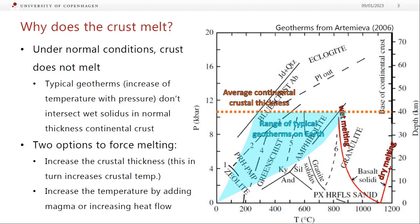So under normal conditions, continental crust does not melt, and the reason for this is that if you look at typical geotherms — and geotherms are just the way that temperature increases as we go down through the crust — they don't really intersect the wet melting curve, and they definitely don't intersect the dehydration melting areas. This is a range of typical geotherms on Earth. At the low-temperature end, this may be in subduction zones where you have relatively cold stuff moving down quickly, and you can get into blueschist facies. Maybe on the high end, you can get up into amphibolite facies, but this is average continental crustal thickness, so we're not really going to cross this melting curve in most cases.